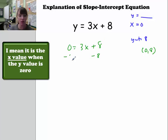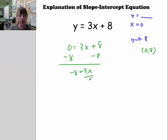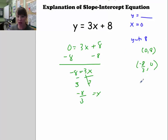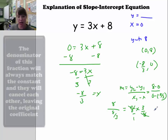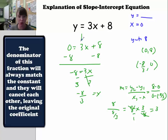Solving for x gives 3x equals negative 8, so x equals negative 8 thirds. That means (negative 8/3, 0) is another point. Using the slope formula — y2 minus y1 over x2 minus x1 — we get 8 minus 0 over 0 minus negative 8 thirds, which simplifies to 8 divided by 8 thirds. When you multiply that out using keep-change-flip, you just get 3. So the slope is 3 — which was the coefficient.